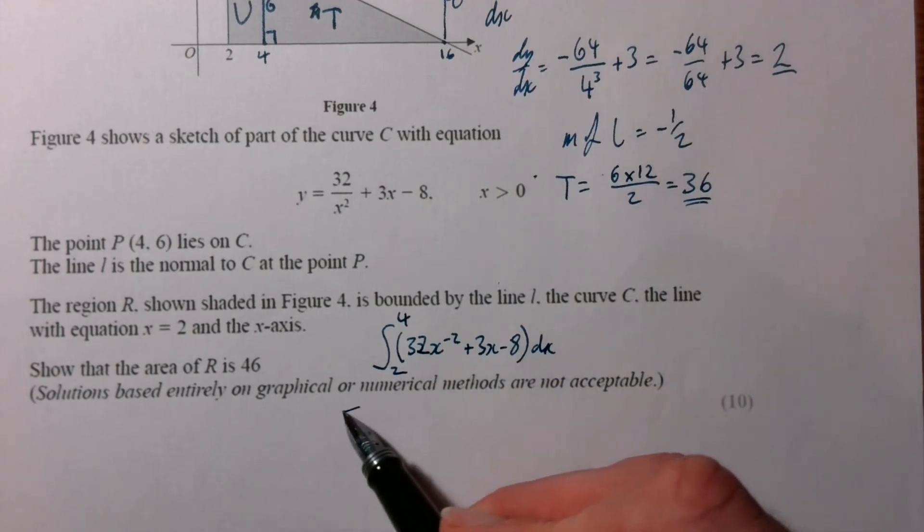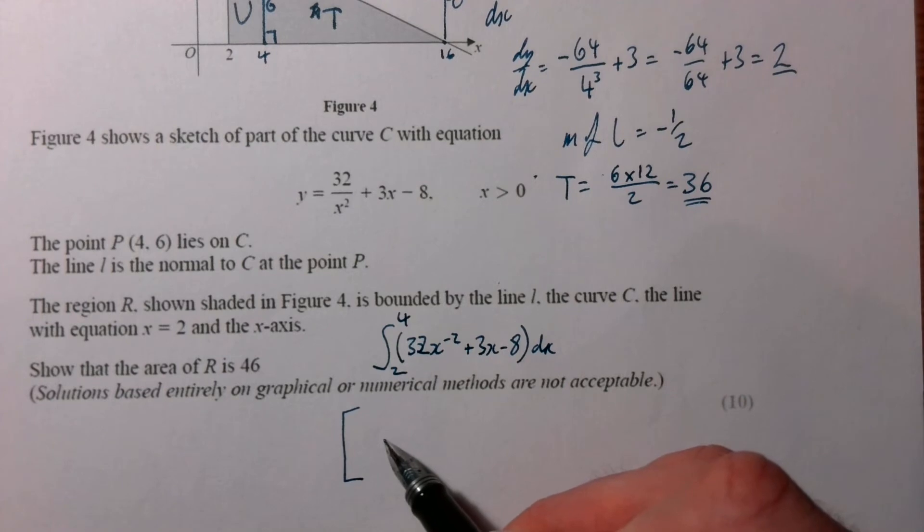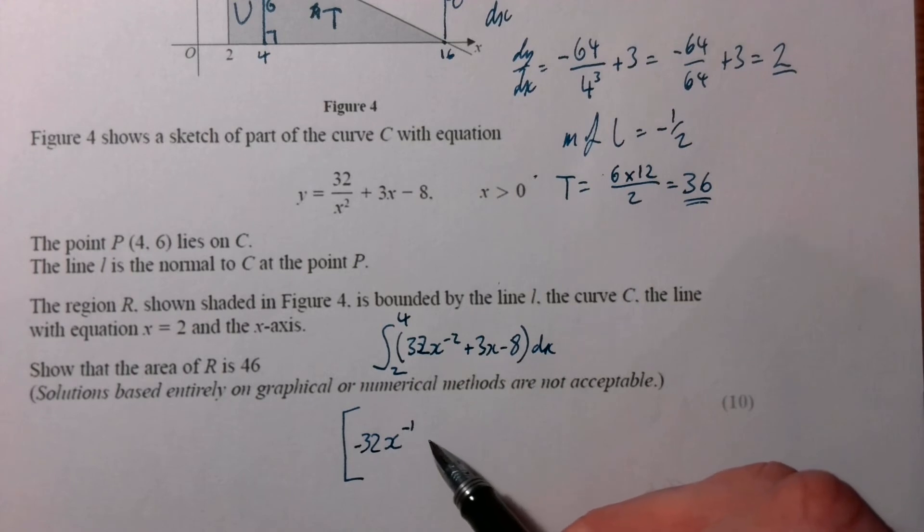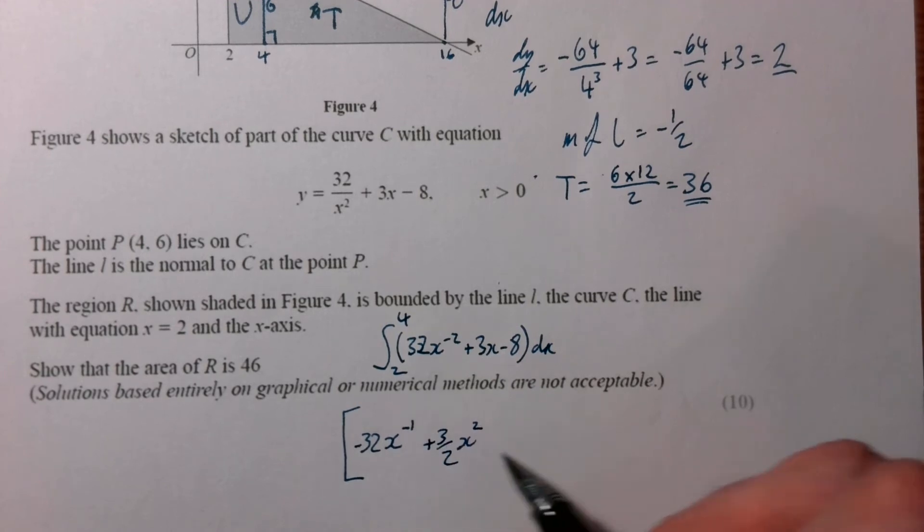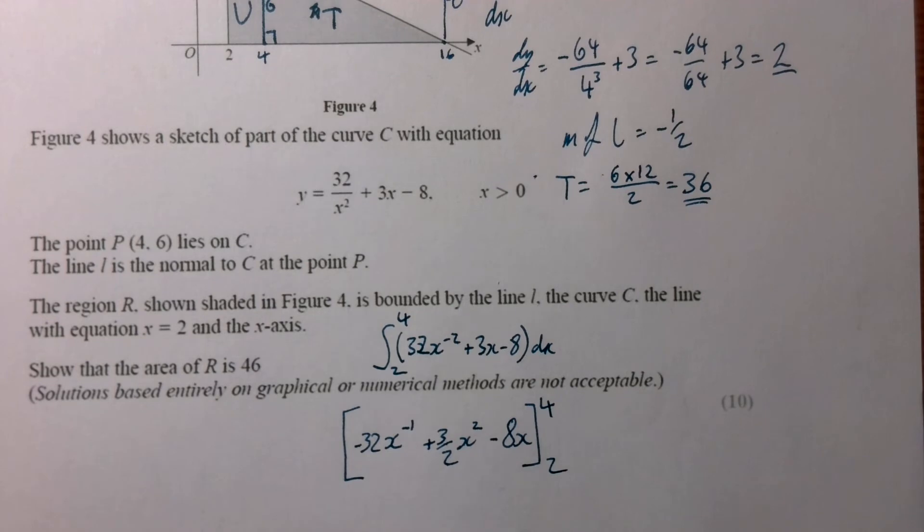So next up, we raise the power by 1 to negative 1, and then divide by the new power, so 32 divided by negative 1 is negative 32. Then we raise the power from 1 to 2, divide by the new power, so that'll be 3 over 2, and the 8 becomes 8x. We don't need to worry about the plus C, because we're doing this between 4 and 2.